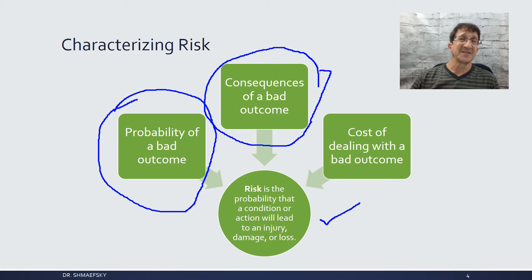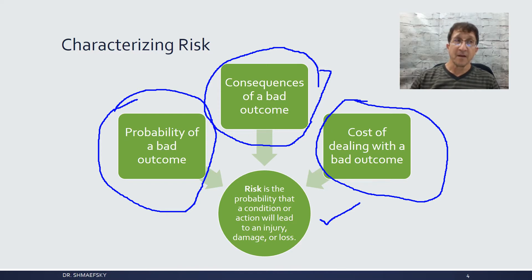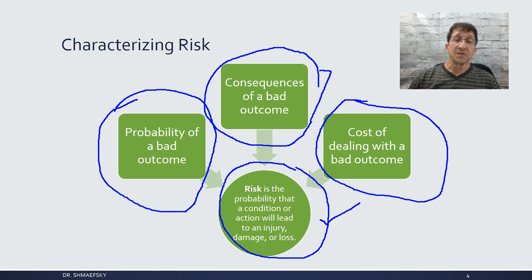We can look at long-term and short-term consequences, not just to our health but also to the environment. This is a big issue with global climate change—there is a consequence, but it's a very long-term one that people don't see within their lifetime. Then there's the cost, because we pay a cost for everything, and we have what are called acceptable costs—what can we afford to have a safe and convenient environment? All that leads into risk: the probability that a condition or action will lead to injury, damage, or loss at a particular cost.